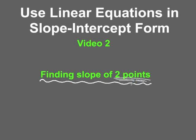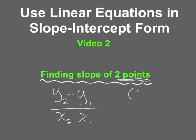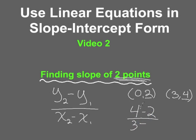As a quick review, to find the slope between two points, we take y2 minus y1 over x2 minus x1. So if we have two points, for example (0, 2) and (3, 4), what we do is take y2 minus y1 over x2 minus x1 to get the slope. In this case, our slope would be 2/3. This should be review — something we're able to do without much thought.